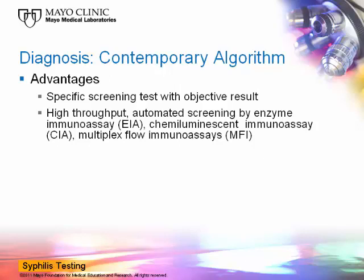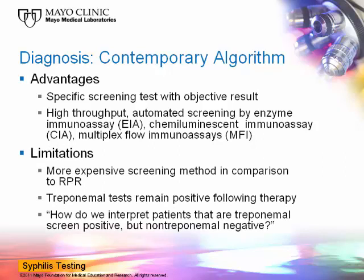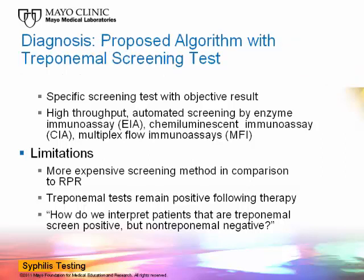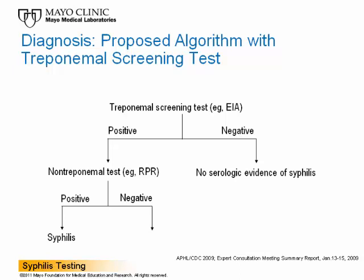However, this reverse testing algorithm comes with several significant limitations. First, most treponemal assays, especially those based on newer technologies such as EIA or multiplex platforms, are more expensive compared to RPR. Second, treponemal tests remain positive following therapy, so the implementation of the reverse algorithm has led to many healthcare providers and laboratorians asking how to interpret results from patients that are treponemal screen positive but negative by non-treponemal tests. This important question prompted members of the CDC and the Association of Public Health Laboratories to meet to discuss syphilis diagnostic testing and subsequently propose a recommended algorithm for when a treponemal-specific test is used for screening.